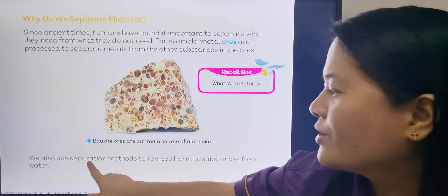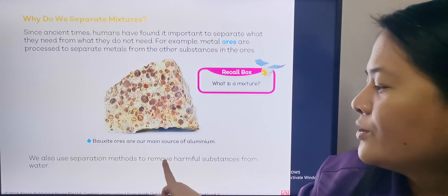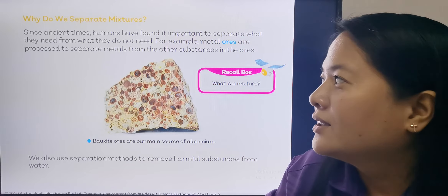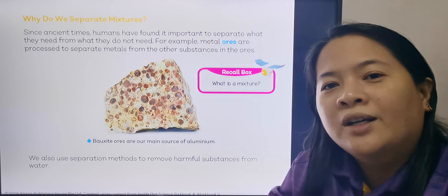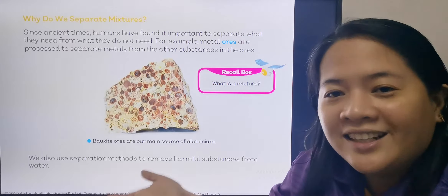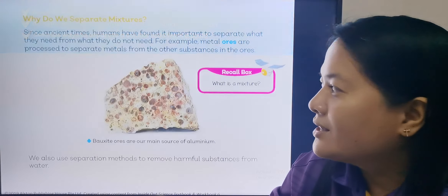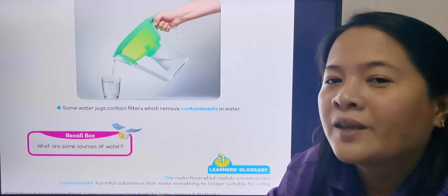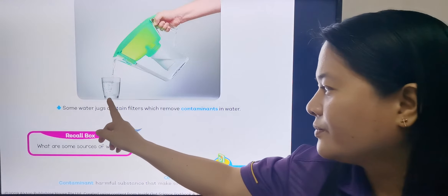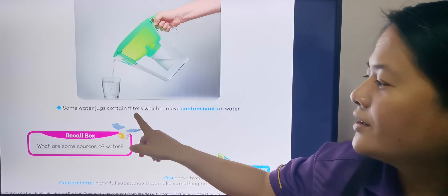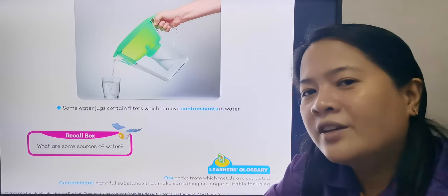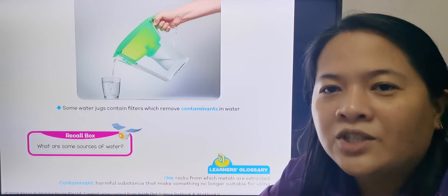We can also use separation methods to remove harmful substances from water. Since we need water and water is important to us, but in nature the water in the river is not clean. So we have to process the water to separate the harmful substances in it so that we can drink it. Some water jugs contain a filter to remove contaminants in the water. There are many reasons why we need to learn about separation techniques — in our everyday life, we use separation techniques.